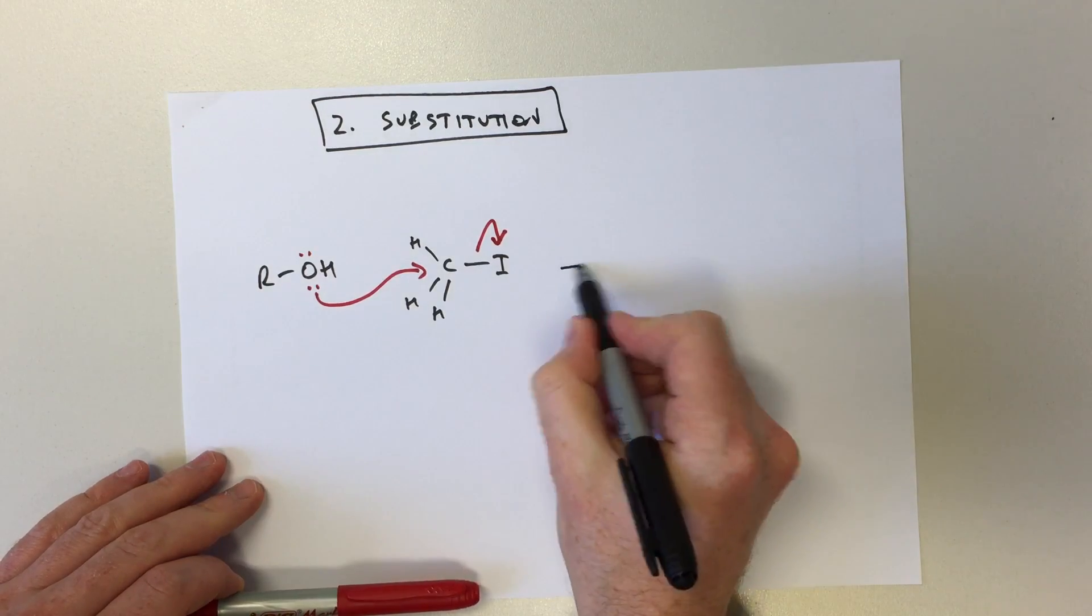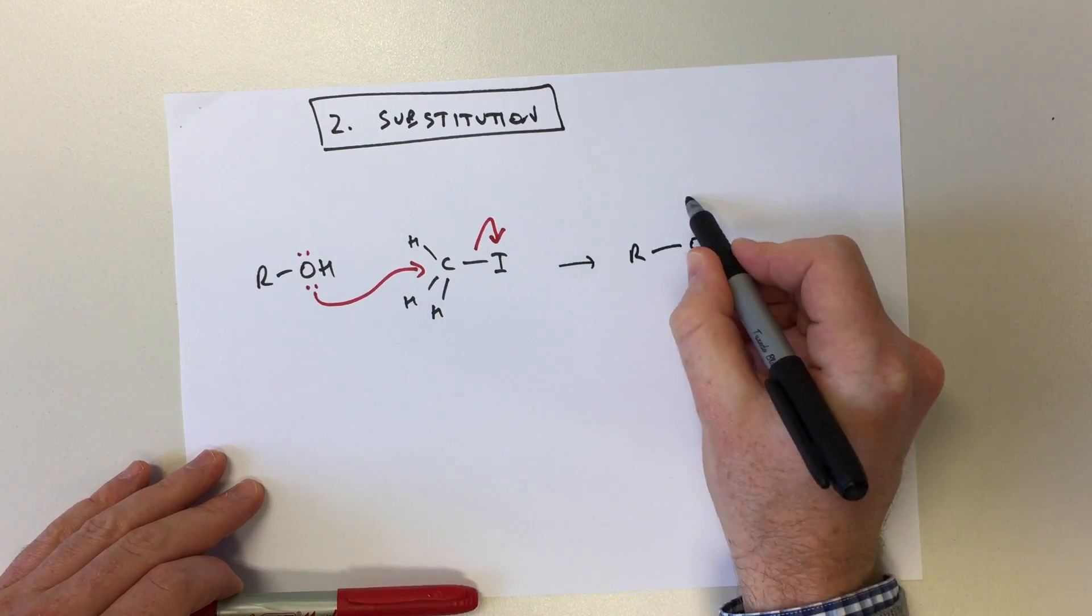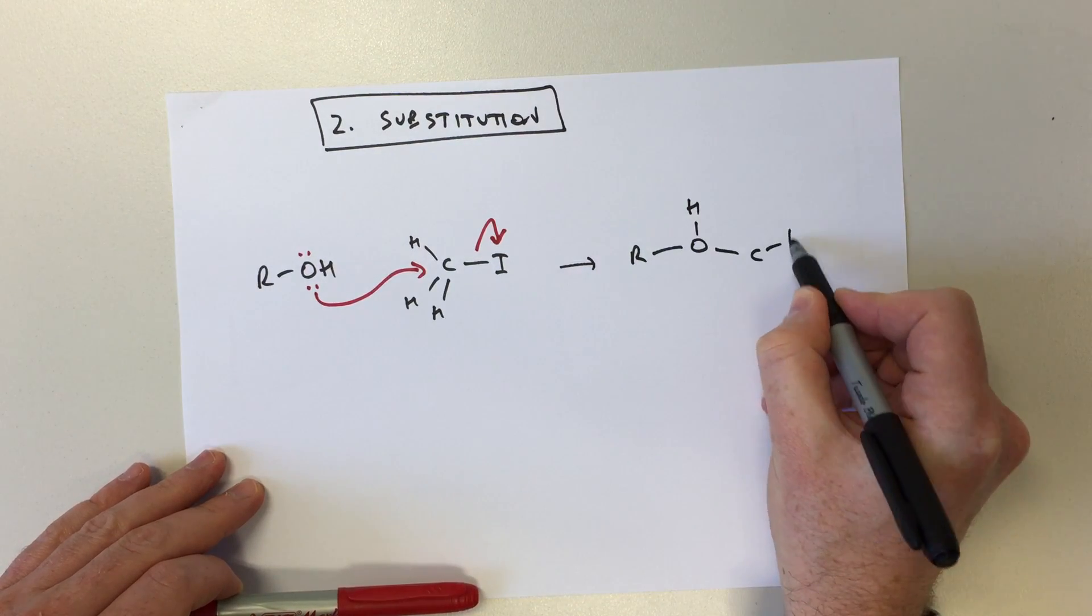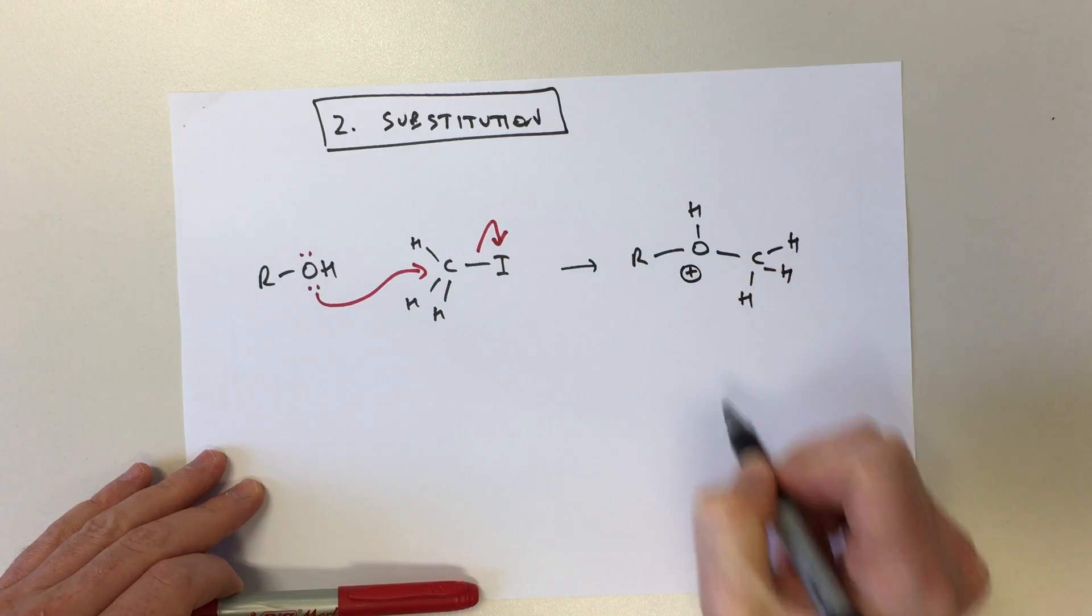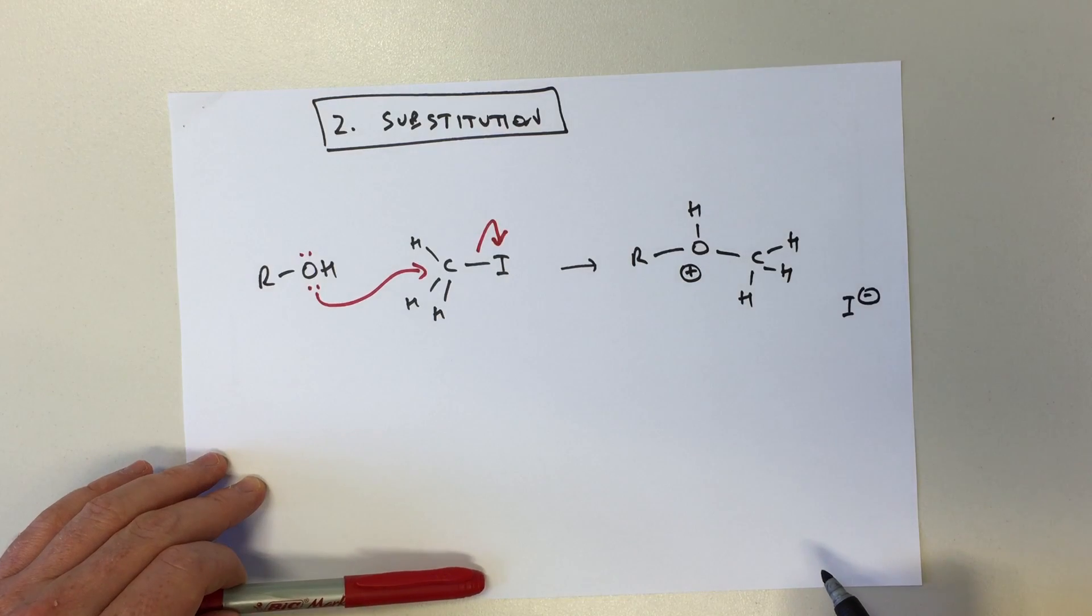And then that will give us this product. There's our organic product and the other product is iodide, I-.